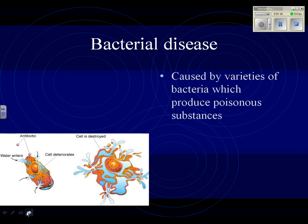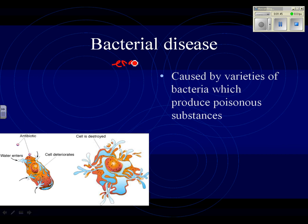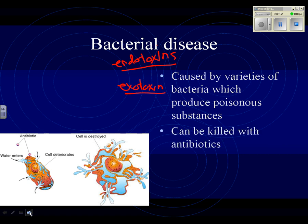First, bacteria. Bacterial disease is caused by varieties of bacteria which produce poisonous substances to you. There are either endotoxins — something poisonous that the bacteria has in itself — or exotoxins, where the bacteria produces a poison that causes you to be sick. The way we fight bacterial disease is with antibiotics, which destroy bacterial cells and leave healthy cells alone.